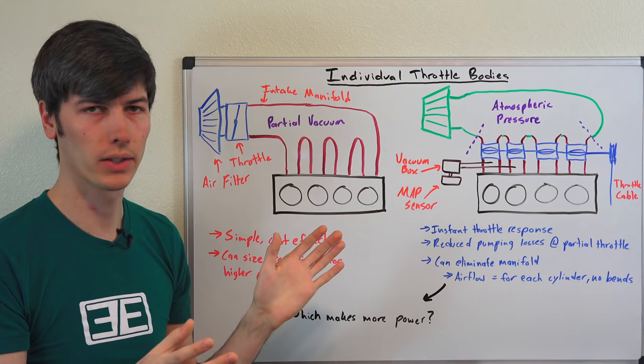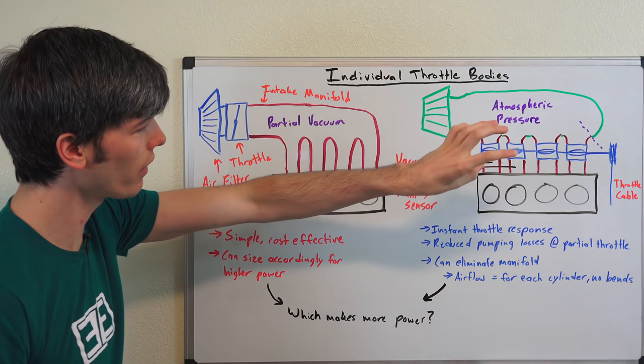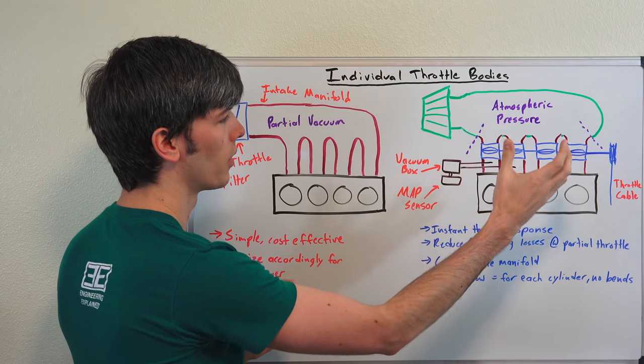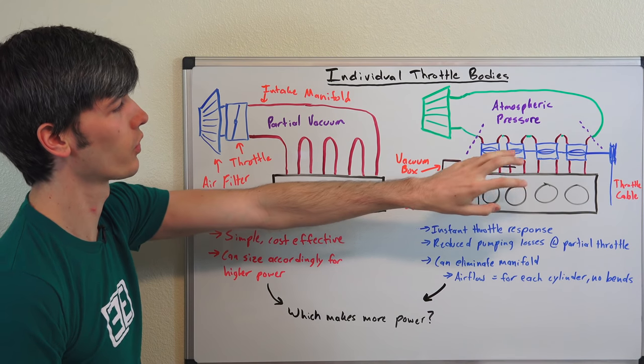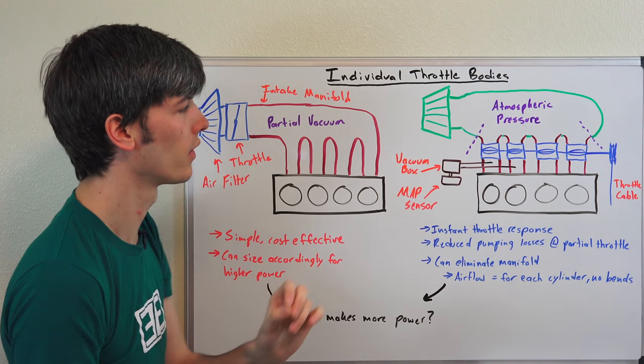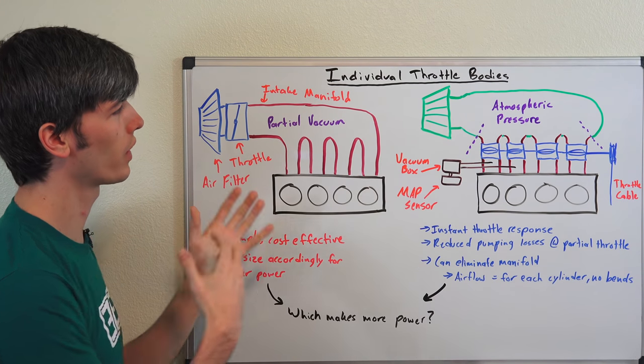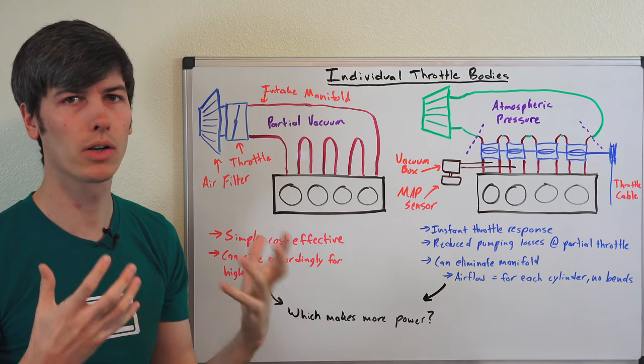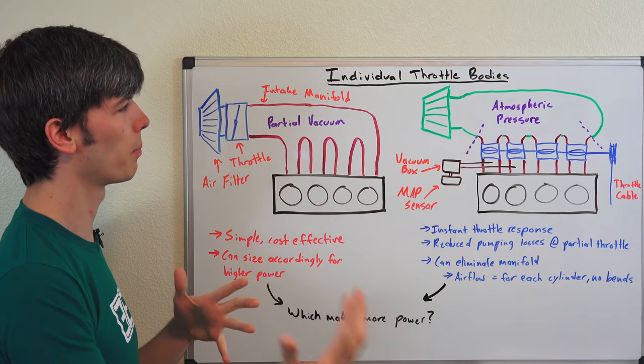And you can have a very restrictive, small individual throttle body system and so at high RPMs it wouldn't work out. So you can have individually tuned velocity stacks for these where you make it very efficient for a certain RPM band, but you don't want to just say that inherently this is going to have more power than this because that all comes down to the sizing of the piping in there. So one's not necessarily better than the other from a power standpoint.